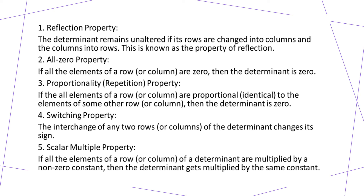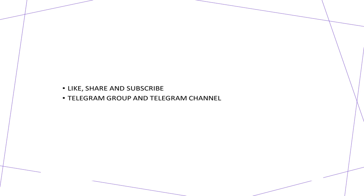The switching property says that if you interchange the rows or columns of a determinant, it changes its sign but the actual value doesn't change. The scalar multiple property states that if all elements of a row or column are multiplied by a non-zero constant, the determinant gets multiplied by the same constant. These are the same properties discussed previously, but now with formal names. Thank you — please like and subscribe to this channel for more videos, and you can be part of my Telegram group and channel; links are in the description.